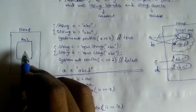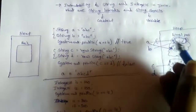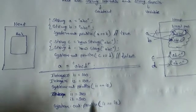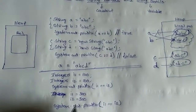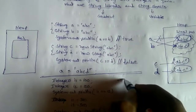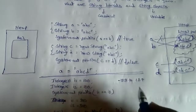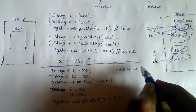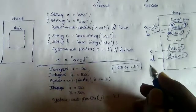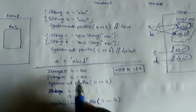Java maintains a pool for Integer, similar to the String literal pool. Integer is immutable, but it is a special case — Integer can be immutable only between the range of -128 to 127. If you define an Integer within this range, it will be immutable; otherwise it will be mutable.